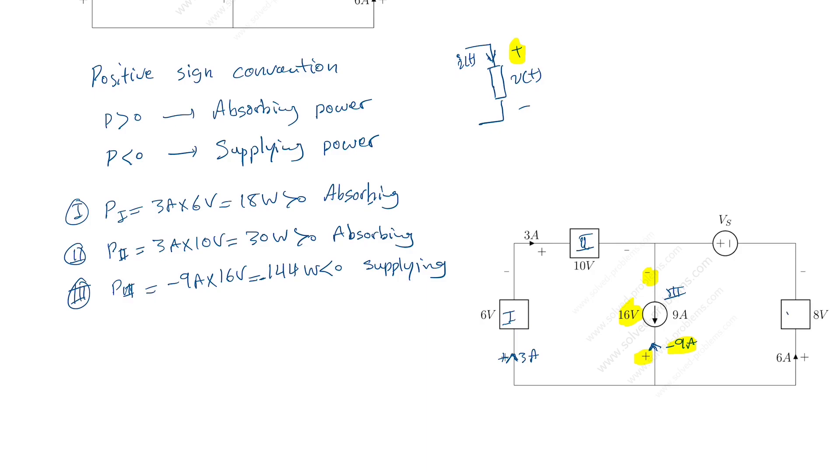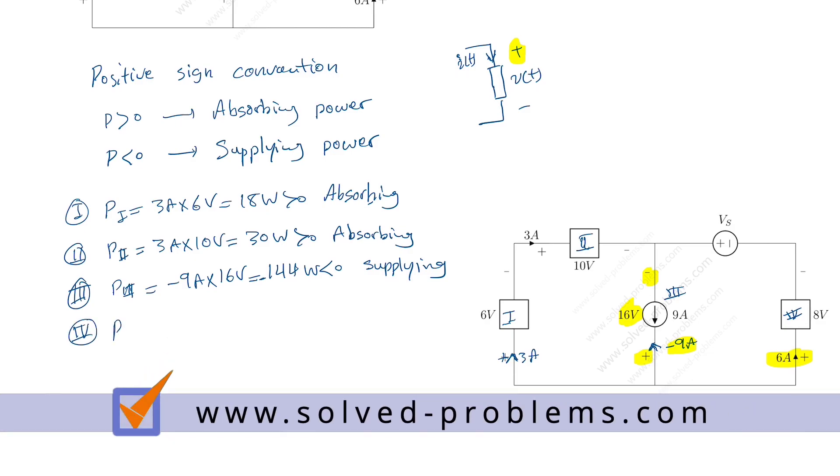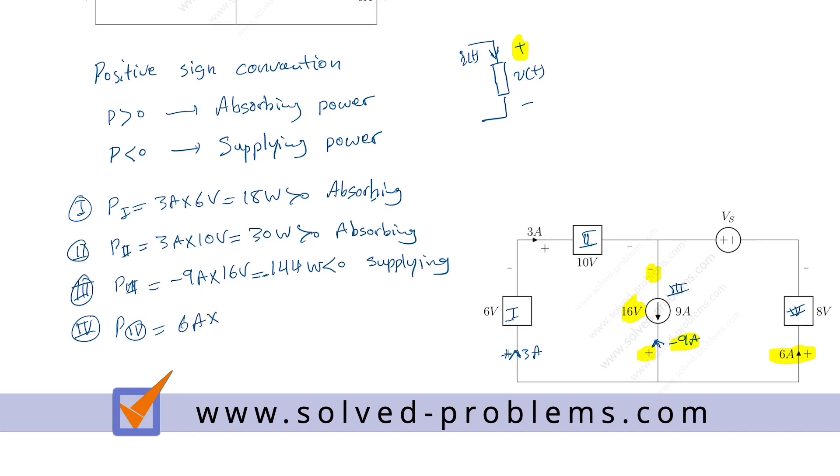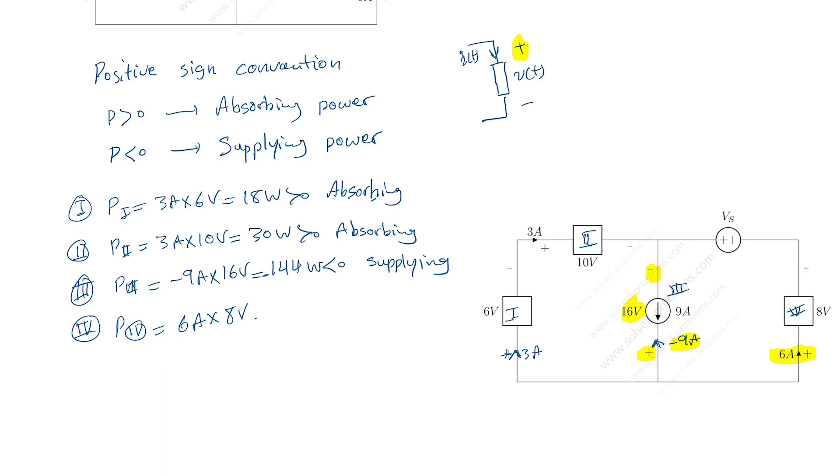And for the fourth element here, what we have? We have six amp entering from the positive reference. So that's easy. We know that power for that element, P4, is six amp multiplied by eight volt, 48 watt greater than zero. So absorbing.